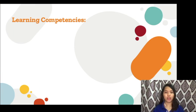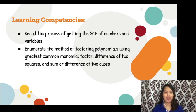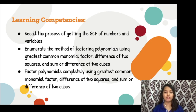Our goals for this week are the following. First, recall the process of getting the GCF of numbers and variables. Second, enumerate the methods of factoring polynomials using Greatest Common Monomial Factor, Difference of 2 Squares, and Sum or Difference of 2 Cubes. Third, factor polynomials completely using these same methods.